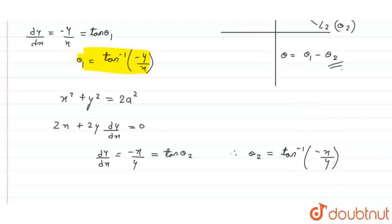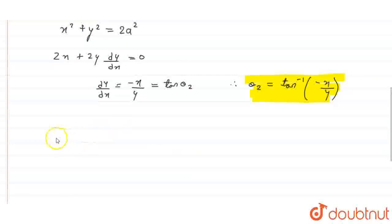We got the value of dy by dx which can be equated to tan theta2, and therefore theta2 can be written as tan inverse of minus x by y. In the similar manner, we got the value of theta2. Now, we have to apply theta equals to theta1 minus theta2 to find the angle between the two curves.